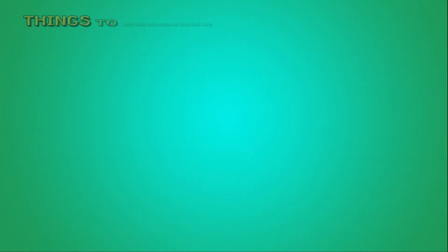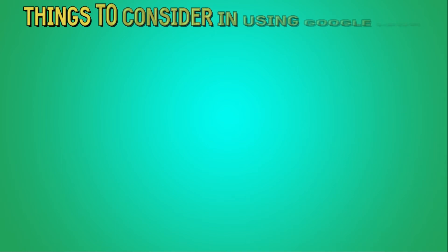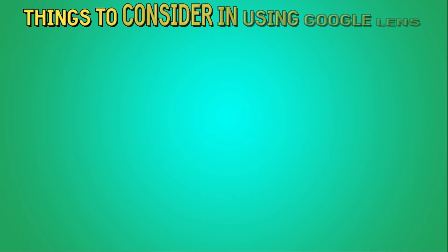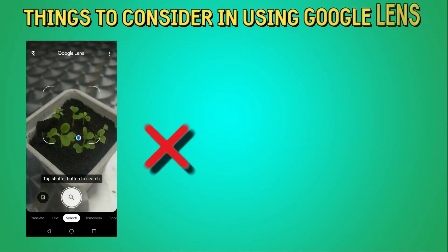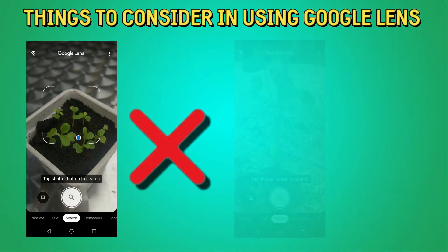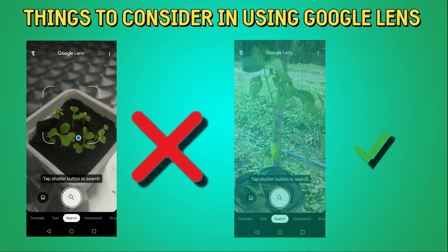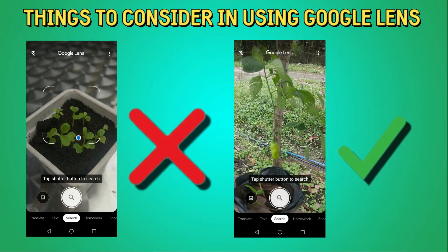Things to consider in using Google Lens to identify plants. First, for more accurate results, use Google Lens only on mature, fully grown plants. If we try to use Google Lens on newly sprouted seeds, there will be lots of results that will come out, since most newly emerged plants are identical.